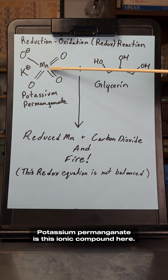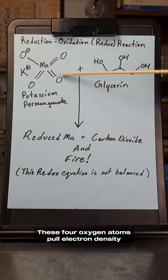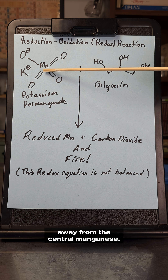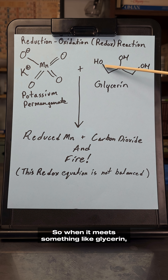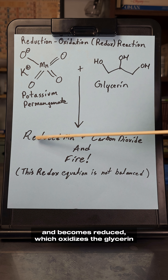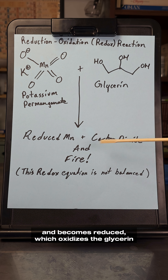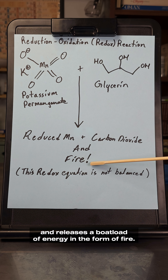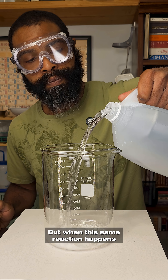Potassium permanganate is this ionic compound here. These four oxygen atoms pull electron density away from the central manganese. So when it meets something like glycerin, the manganese grabs electrons from it and becomes reduced, which oxidizes the glycerin and releases a boatload of energy in the form of fire.